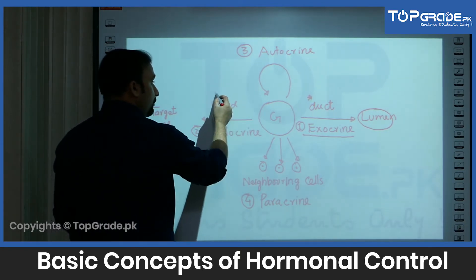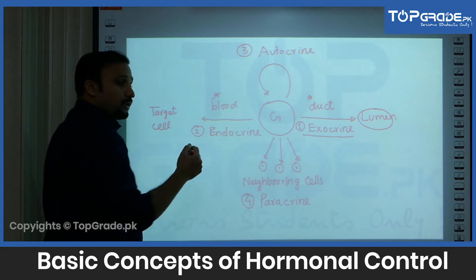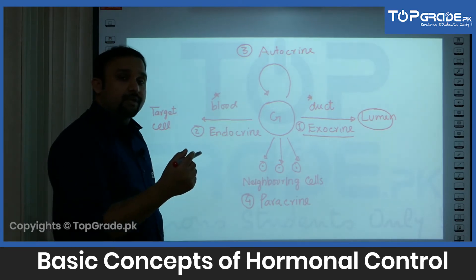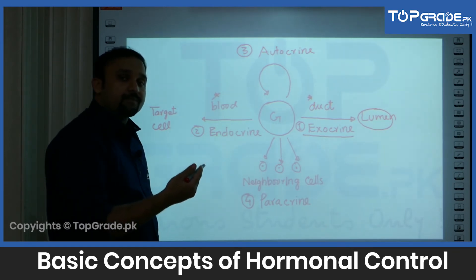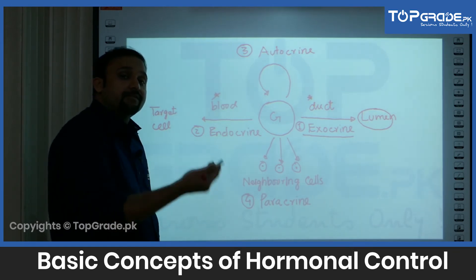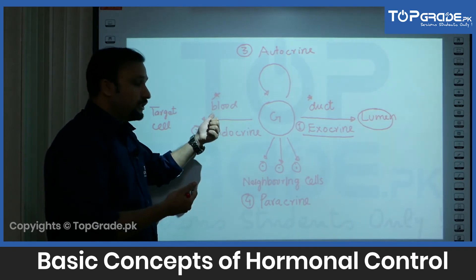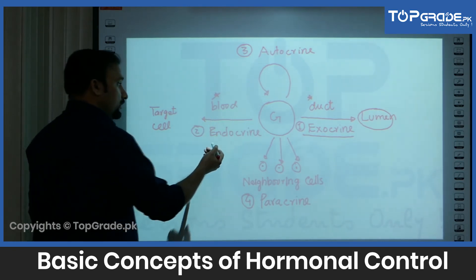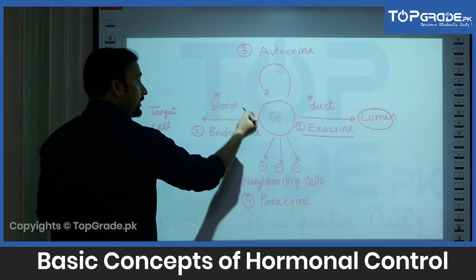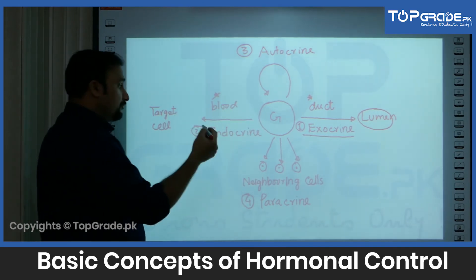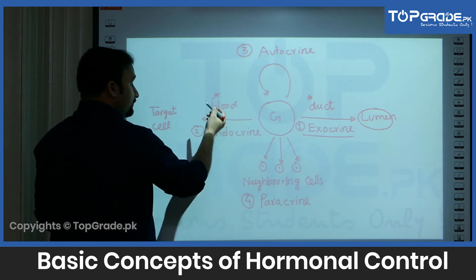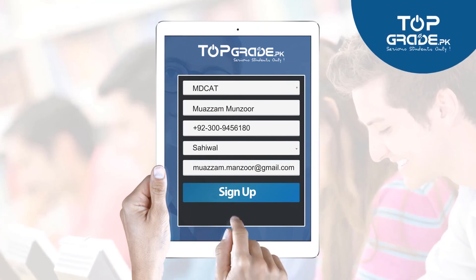This other category of glands releases their secretion directly into the blood. Once in the blood, the secretion travels throughout the entire body. Wherever there are receptors for that particular secretion, it acts on those respective target sites. So these glands that secrete directly into the blood — since you're in the blood, you're everywhere — ultimately reach their targets.